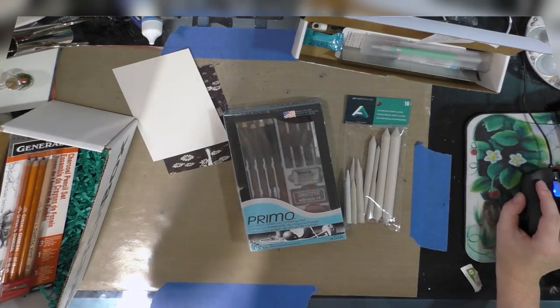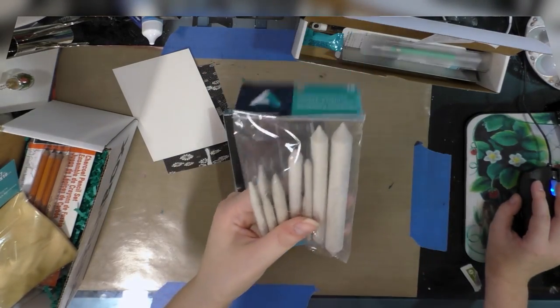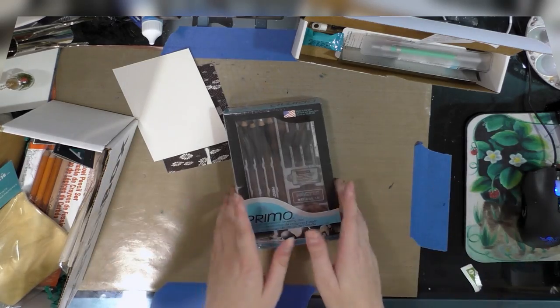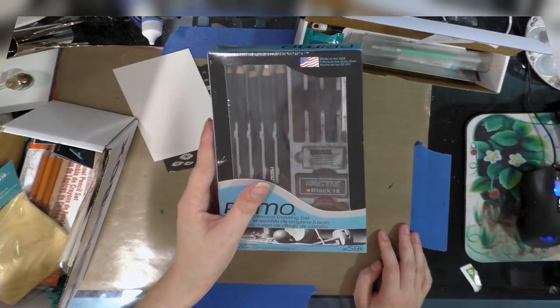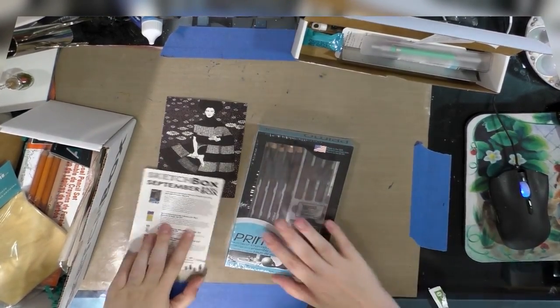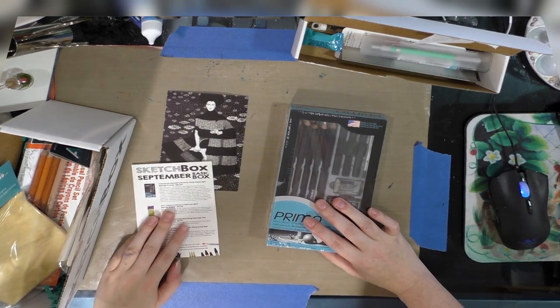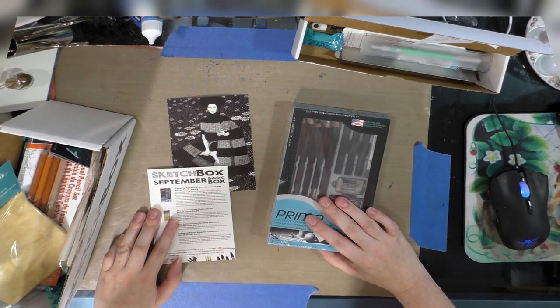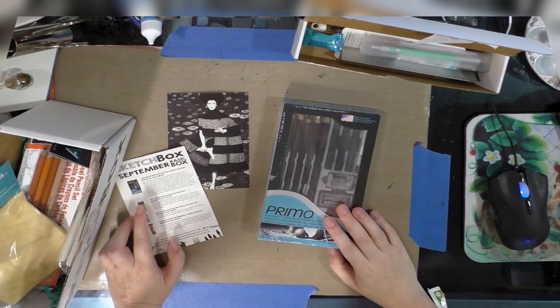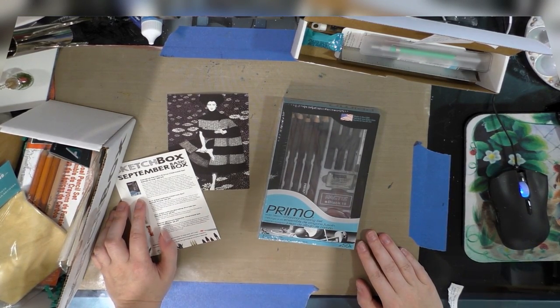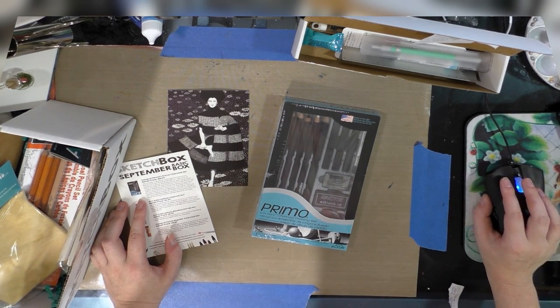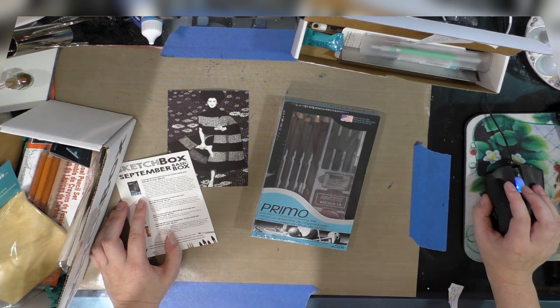The chamois is $4.39 retail price, $6.48 on Amazon, or $5.49 at Joann's. The stumps and tortillions 10-piece set is $5.99 full price, $5.08 on Amazon, $4.90 on Art Supplies Online. Lastly, the Primo charcoal drawing set, also made by Generals, is $18.49 retail price, $12.35 on Dick Blick, or $20 through Generals.